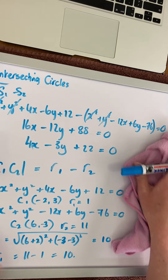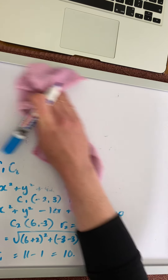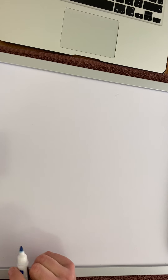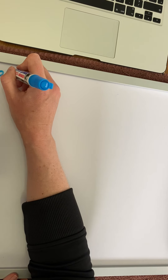So the last scenario is where we have circles that touch with a common chord. For the purposes of this, we're going to look at question 8 on page 347.